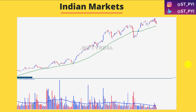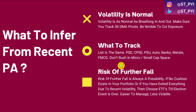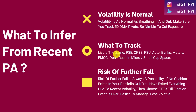So what do you infer from the recent price action? There are three points. Number one: volatility is normal — as normal as breathing in and out. All you have to do is track 50 DMA pivots, but be nimble to cut your exposure if you see violation happening at the pivot level. What to track? The list is the same: PSE, CPSC, PSU banks, auto, overall banking sector, metals, and FMCG. That's all. If you stick with this, these are some major winners in the market and they will again set up.